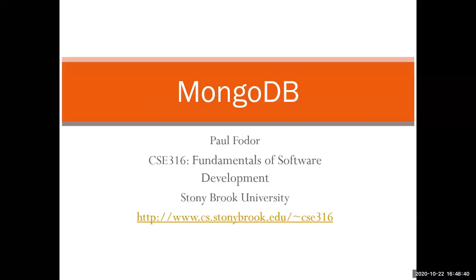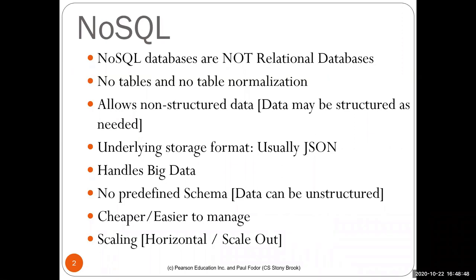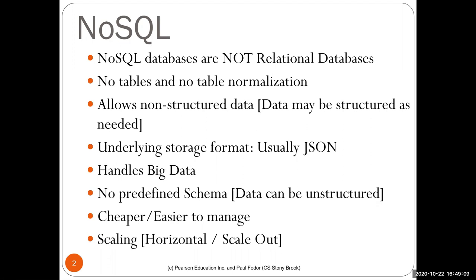Today we'll talk about MongoDB. First of all, NoSQL — not only SQL, or non-relational databases — is a very popular area these days. The idea is that there are no tables and no table normalization. It allows non-structured data; basically the data may be structured as needed, which is what we discussed last class about JSON. You can have just the document, and the document may contain records with different structure and different data fields. The underlying storage format for most of these NoSQL databases is usually JSON.